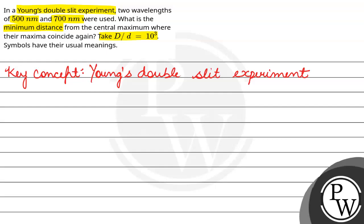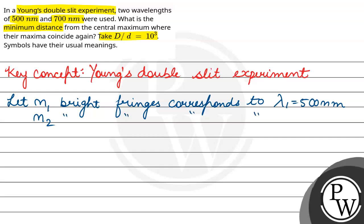Young's double slit experiment. Now, according to my question, the two wavelengths of 500 nanometer and 700 nanometer were used. So, let N1 bright fringe corresponds to lambda 1 equals to 500 nanometer. And N2 bright fringes corresponds to lambda 2 equals to 700 nanometer.